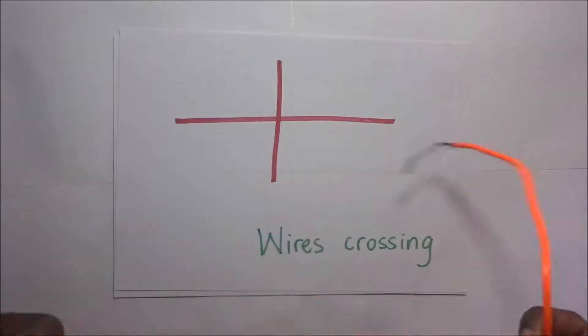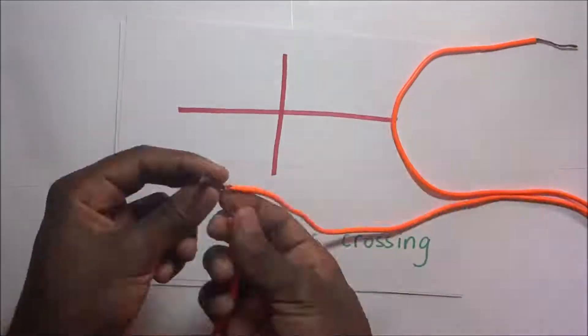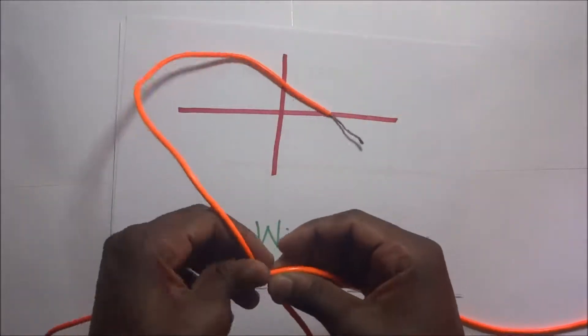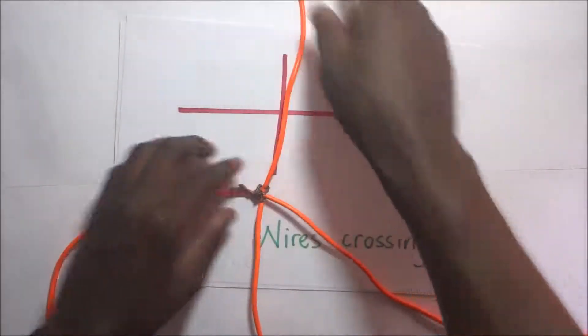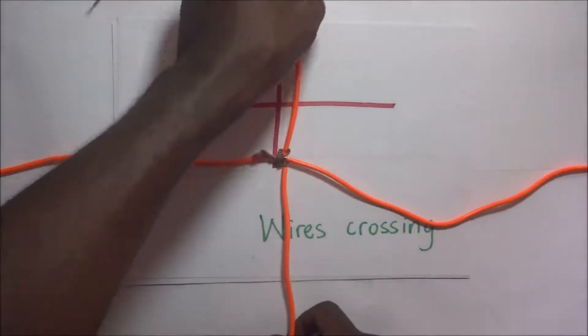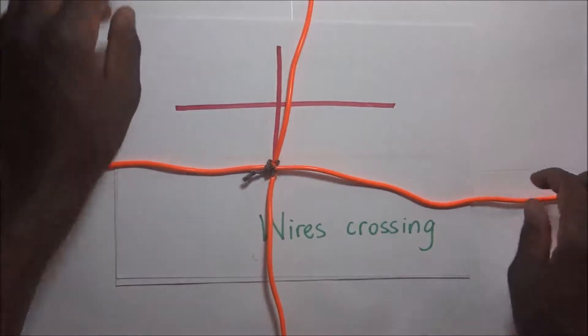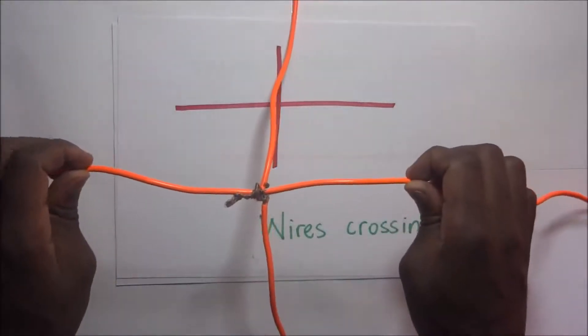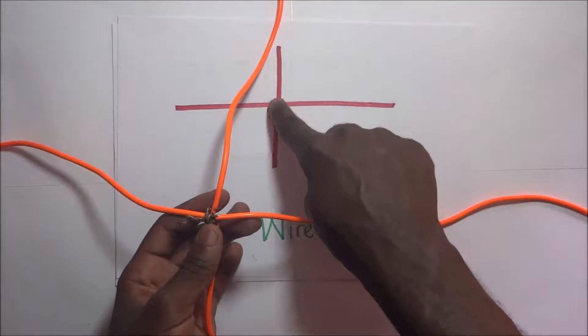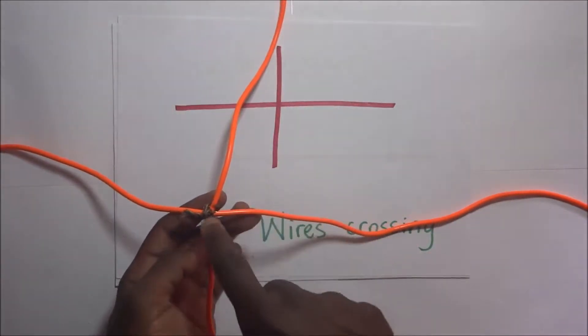How do you represent where wires are joined? I have joined four wires and created a joint right there in the middle. Representing this on a circuit diagram, you would put a dot right there to show that these wires are not just bypassing each other but are joined together.